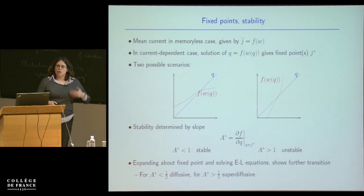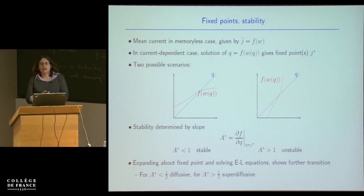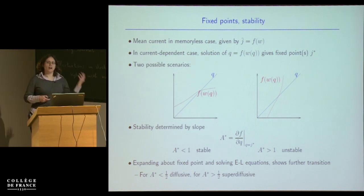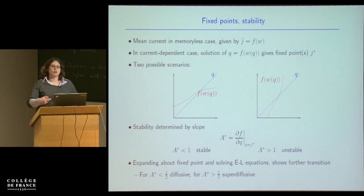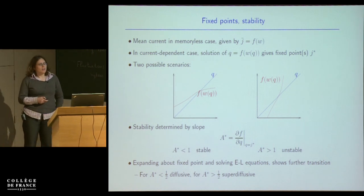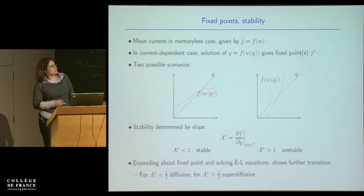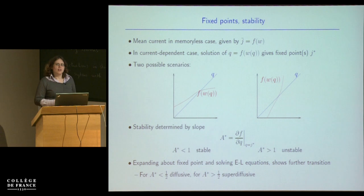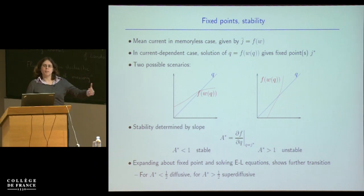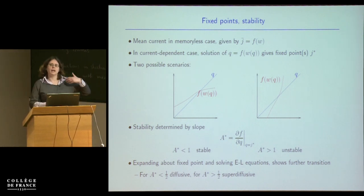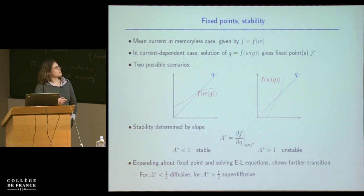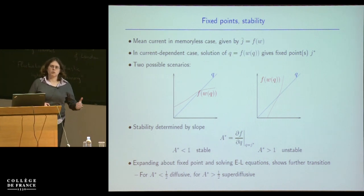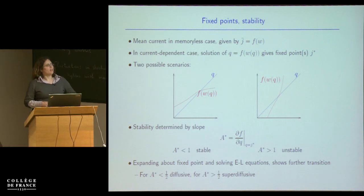With a single stable fixed point, I can do an expansion about that fixed point, plug it into the rate function and the Euler-Lagrange equations, and find out what the fluctuations look like in the case with memory. What you find is that there's another transition, even for A* less than one. If the slope is less than a half, the fluctuations are diffusive — the power in the large deviation principle is still T, just like an ordinary large deviation principle. If the slope is bigger than a half but still smaller than one, you find super-diffusive fluctuations and a different power of T in the large deviation principle.